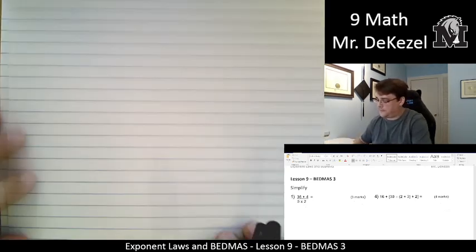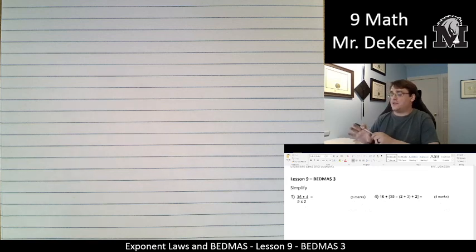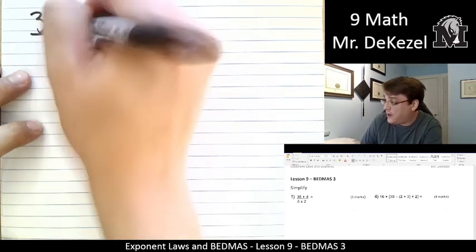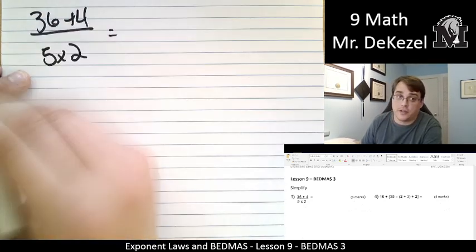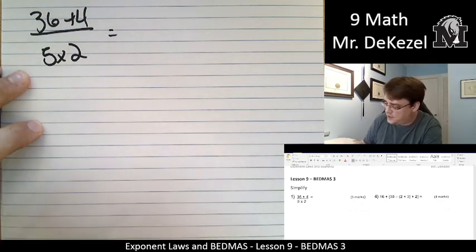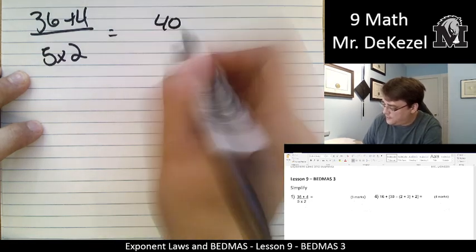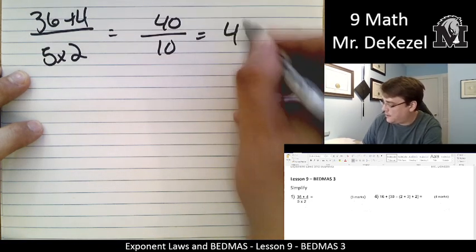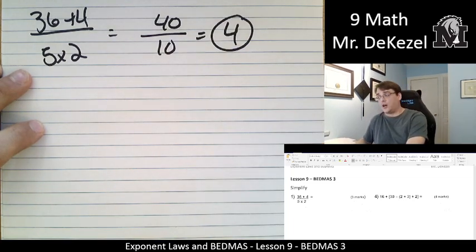Let's do the first one. First one is not too bad, so don't get comfy. 36 plus 4 divided by 5 times 2. We can do the top and then we do the bottom. So we have 40 on top. 36 plus 4 is 40, 5 times 2 is 10, and that all equals 4. We're feeling good.